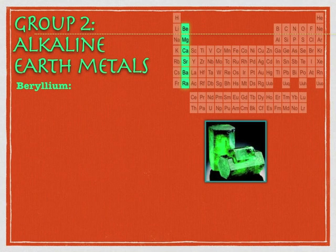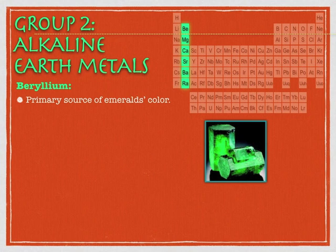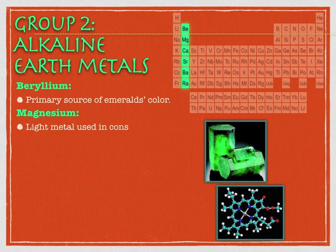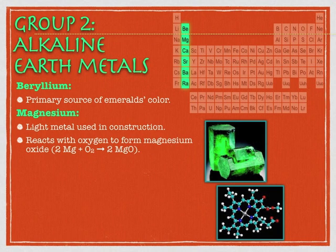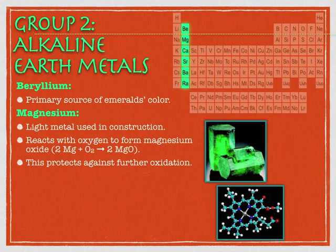Beryllium is a lot of fun — for fans of the Wizard of Oz, it's the primary source of an emerald's color, which is kind of neat. Magnesium is a light metal used in construction. When it oxidizes, it actually burns with a characteristic bright white light, producing magnesium oxide, a very distinct white powder. But if you just leave it out, the outer coating of magnesium will oxidize and protect against further oxidation. A lot of these less reactive metals will do that — alkaline earth metals and group 13 elements like aluminum will oxidize to protect themselves against further oxidation.